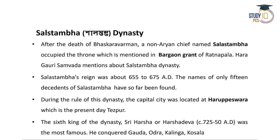After Bhaskarvarman died childless, a non-Aryan chief named Salastambha occupied the throne of Kamrup. This incident is mentioned in the Boragaon Grant of Ratnapal, who was a king of the Pal dynasty. The Haragauri Sambad, Kalikapurana, and Yogini Tantra also mention the Salastambha dynasty. The reign of Salastambha was from 655 to 675 AD.